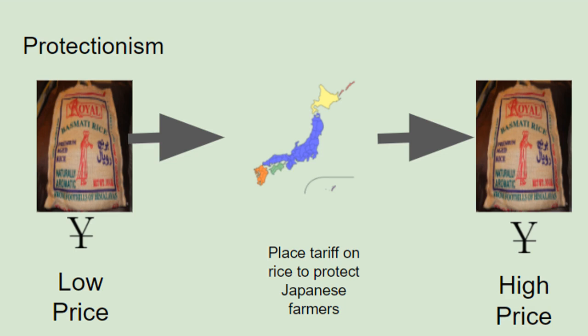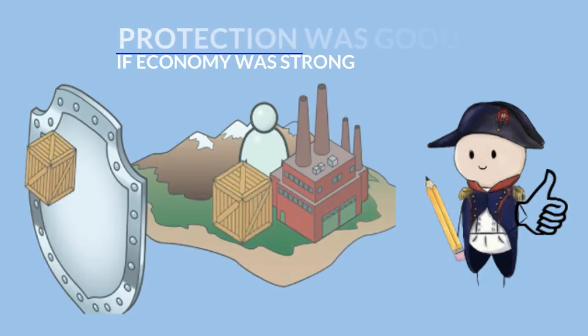A lot of Southeast Asian countries like Thailand can grow rice much cheaper than they do in Japan. Therefore, when they sell it in the Japanese market it is much cheaper, and Japanese consumers would tend to buy the cheaper version. However, the Japanese government wants to protect Japanese farmers, so they would charge a tariff or import tax on Thai rice, raising the price of Thai rice above Japanese rice, so Japanese consumers would purchase Japanese rice, thus protecting Japanese rice growers.